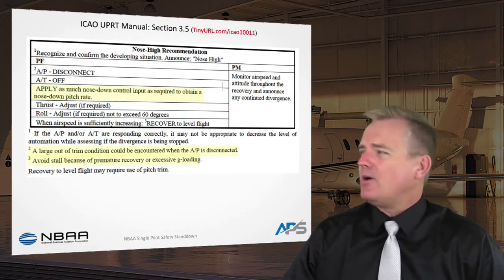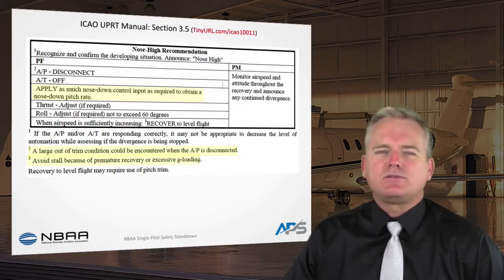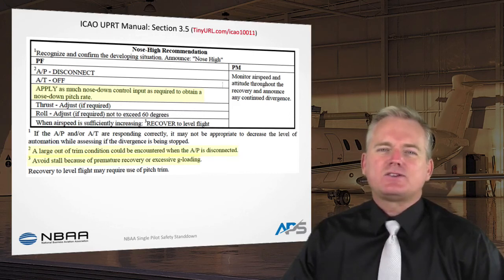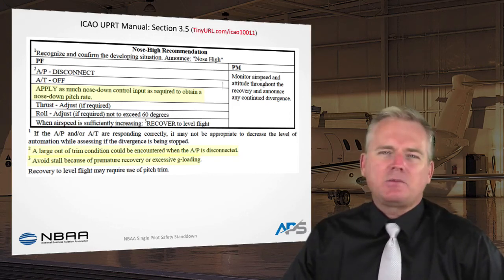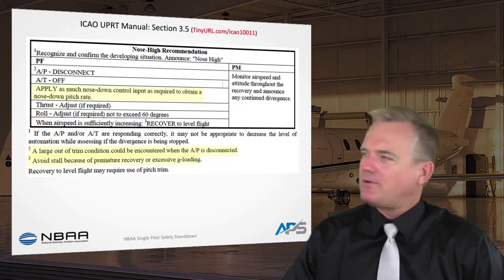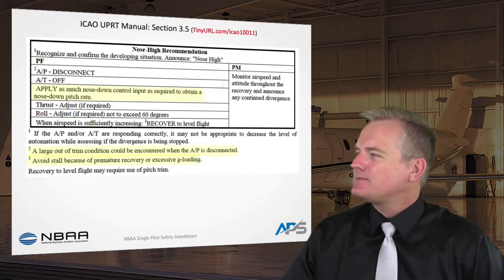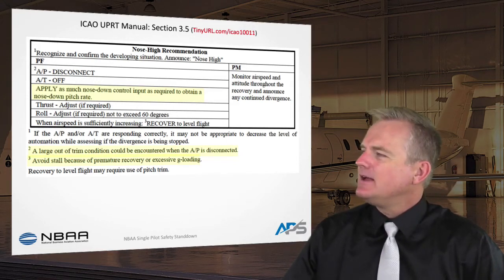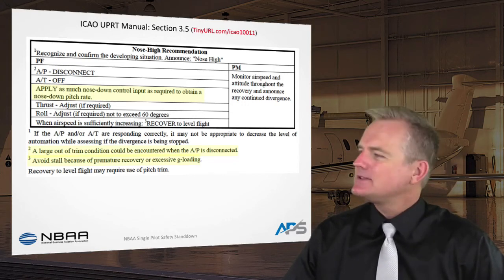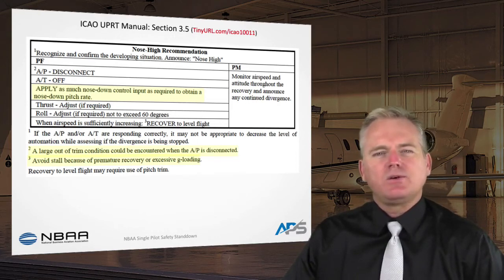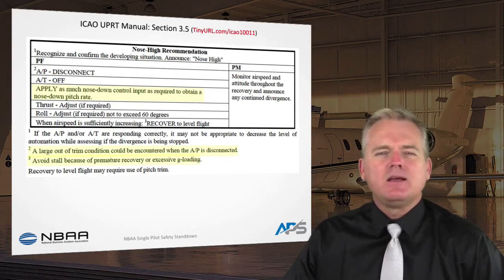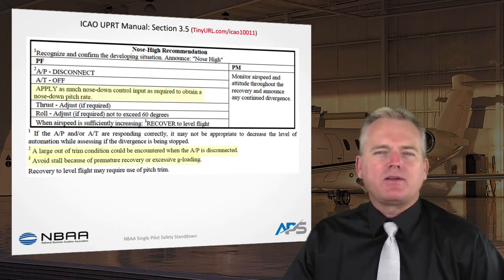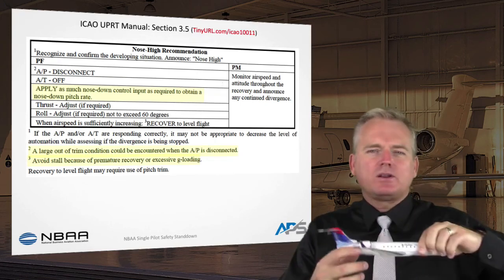Now let's go to the ICAO Manual on Upset Training. In 2014, after five years of research by over 100 individuals and 40-plus organizations worldwide, ICAO produced the Manual on Airplane Upset Prevention and Recovery Training. In the nose-high recovery section, just as reducing angle of attack was critical in stall recovery, pushing to reduce angle of attack is also critical in a nose-high situation. Traditionally pilots have been taught to roll nose-high — rolling can help bring the lift vector down and preserve energy — but it is secondary.